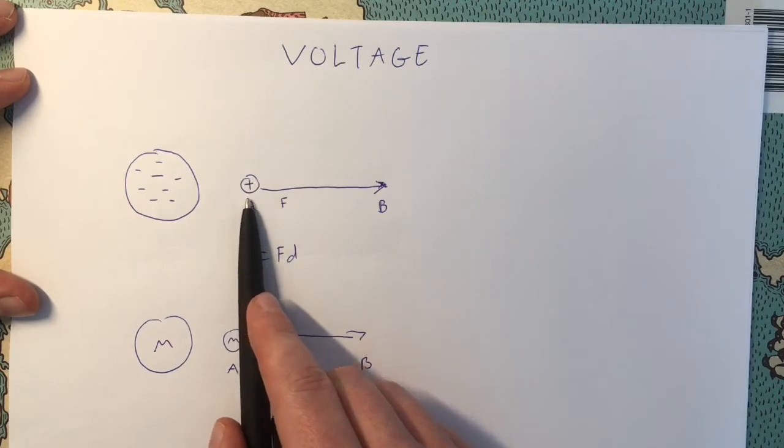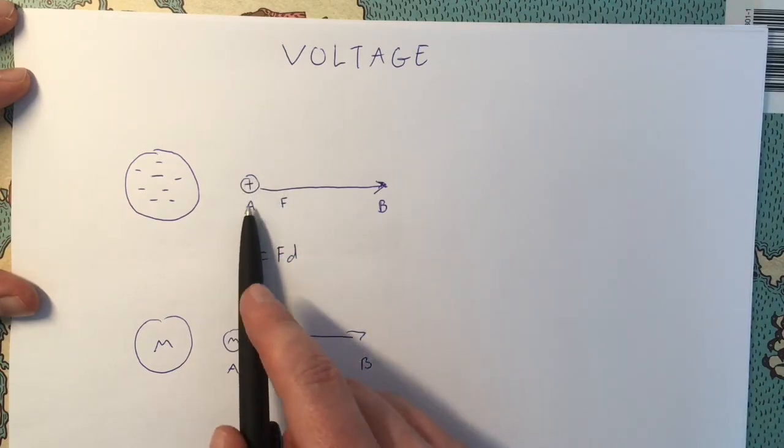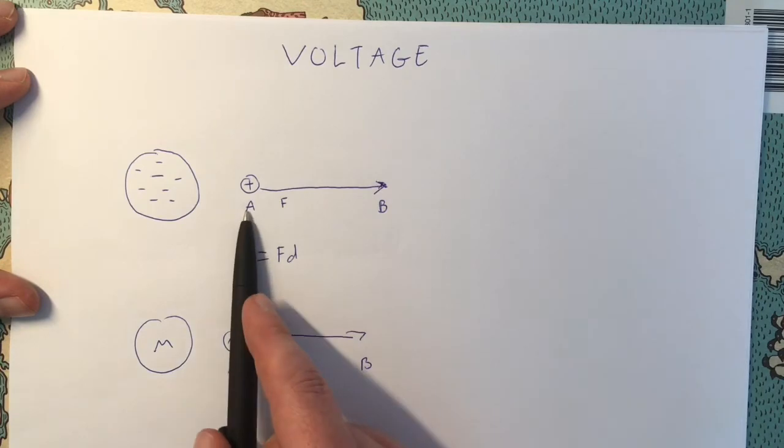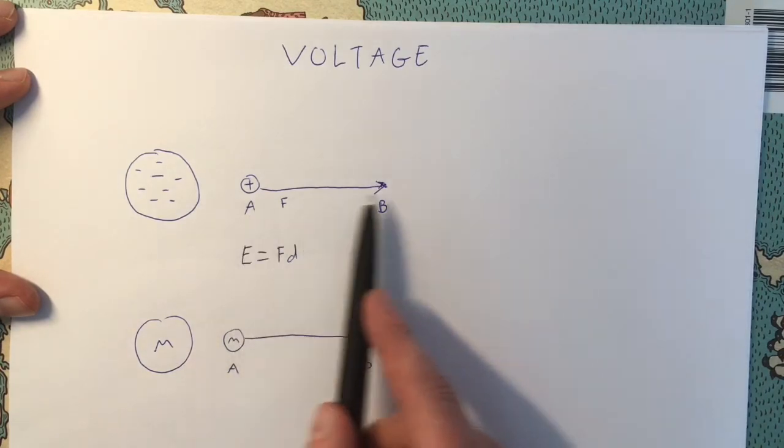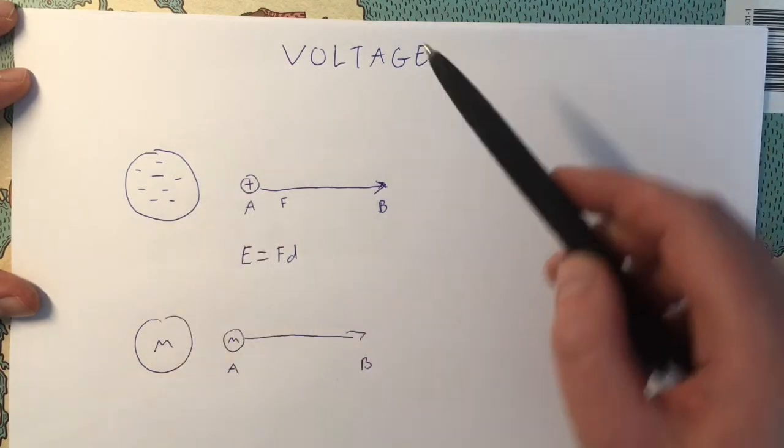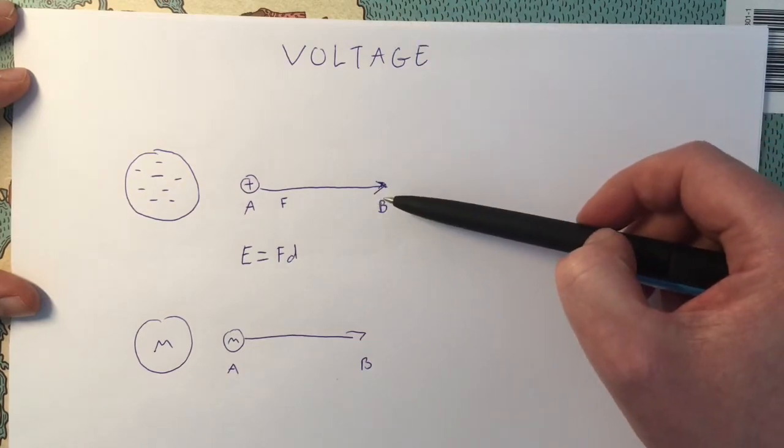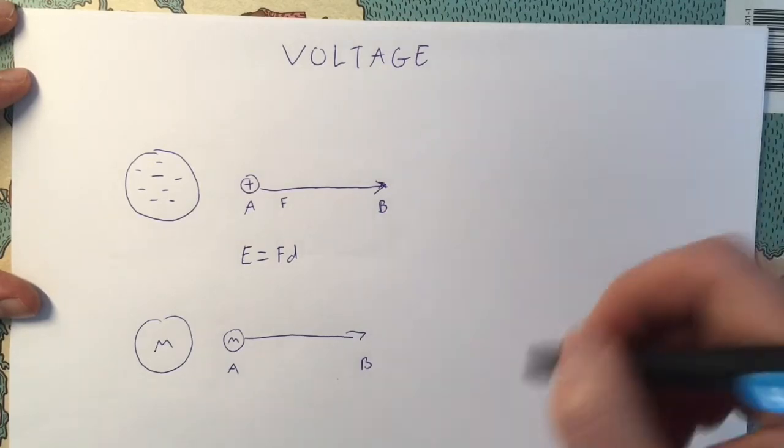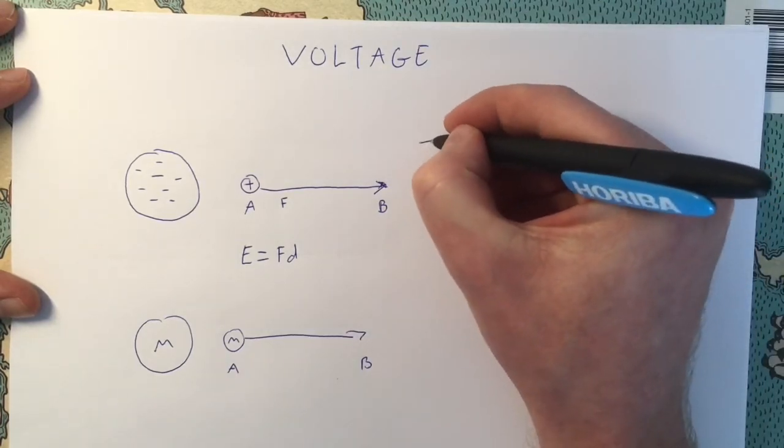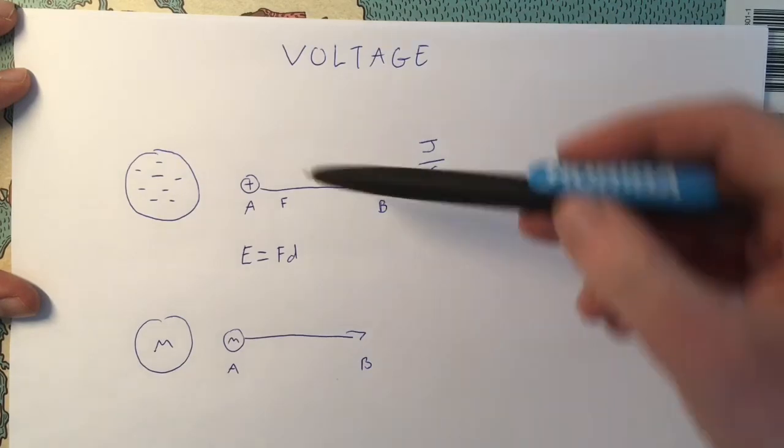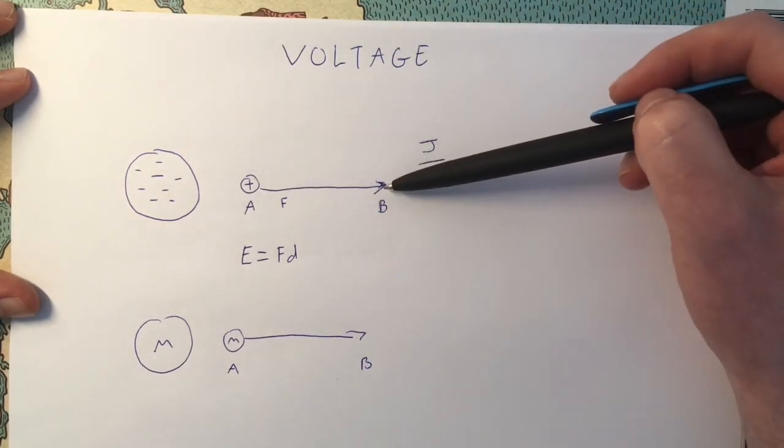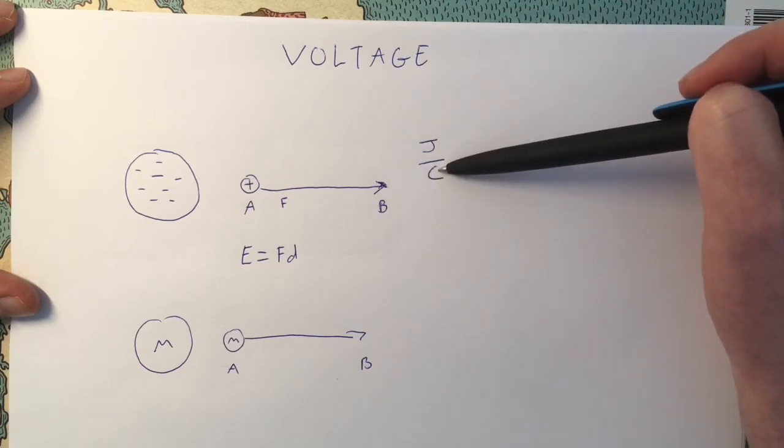If we have our single charge, if we move it from this point to this point, then it's going to want to move back to this point. It's got a force pulling it in. Voltage is given in units of joules per coulomb. The joules bit is this potential energy that a unit of charge has got.